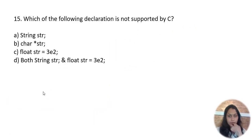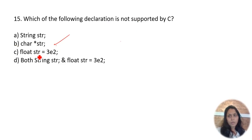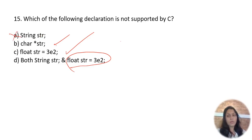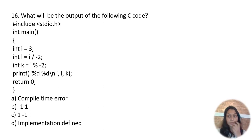Which of the following declaration is not supported by C? 'char string' is supported. 'float string[3][2]' is supported. But 'string str' is not supported in the C programming language — remember that point.